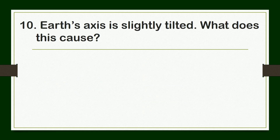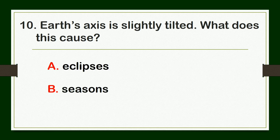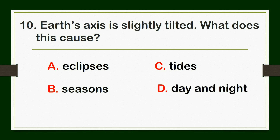Earth's axis is slightly tilted. What does this cause? A. eclipses, B. seasons, C. tides, or D. day and night.